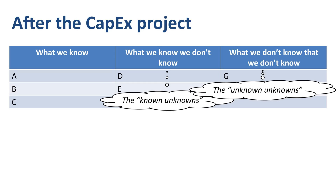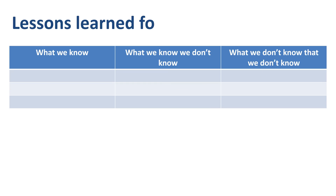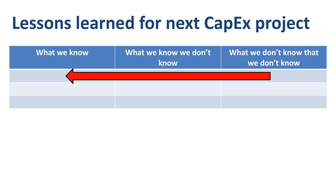The main benefit of doing a retrospective on a CAPEX project is to summarize the lessons learned in the previous project before you embark on your next project — transferring what you learned about things you didn't know that you didn't know into the columns of what you now know, or what you now know that you don't know, for your next project.